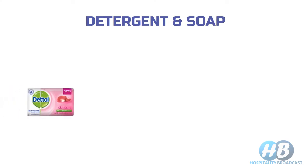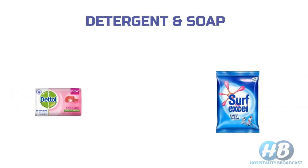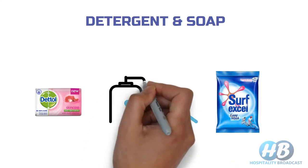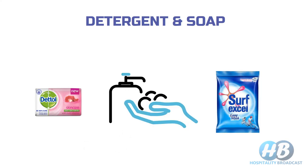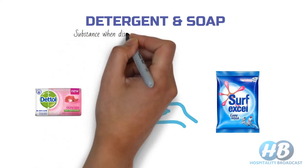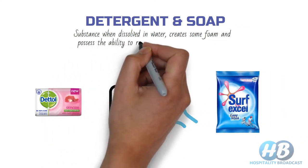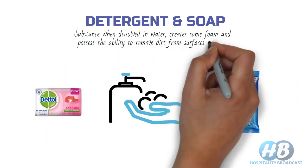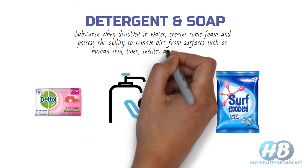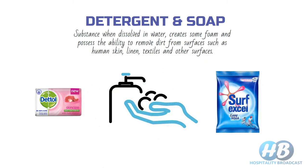Next is detergent and soap. In simple terms, these are substances which, when dissolved in water, create some foam and possess the ability to remove dirt from surfaces such as human skin, linen, textile, and other surfaces. There are a variety of brands available in the market for soap and detergent.